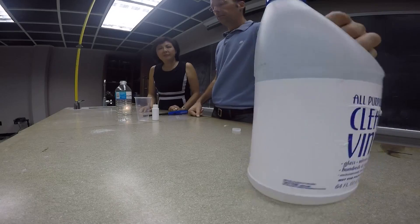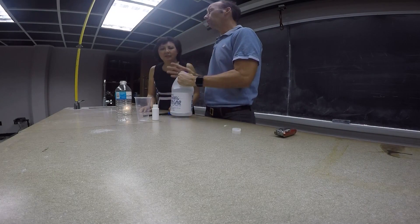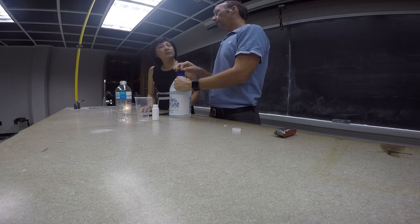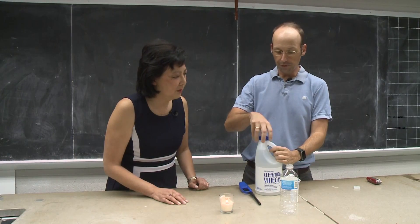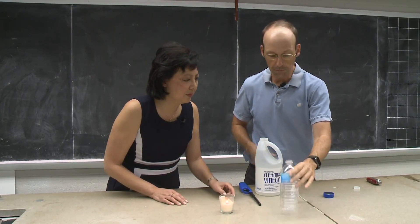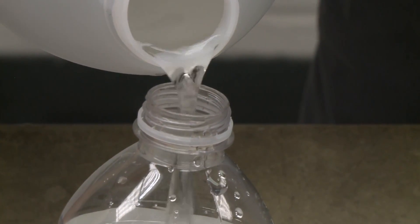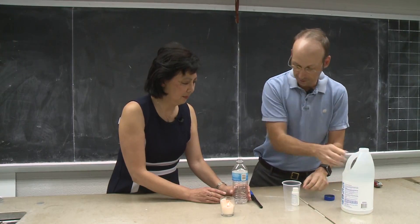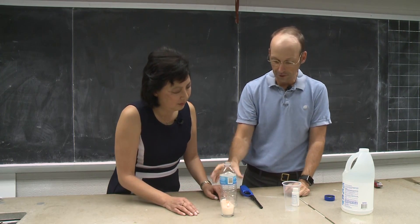So we're gonna do that with two things that you have in your house. Vinegar. Any vinegar will do. Vinegar is an acid. So I'm gonna pour some into this bottle. I spilled a little bit. That's okay. So I just need a little bit of vinegar.